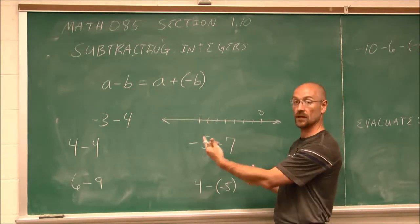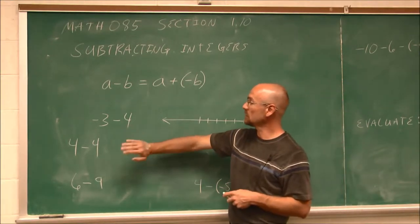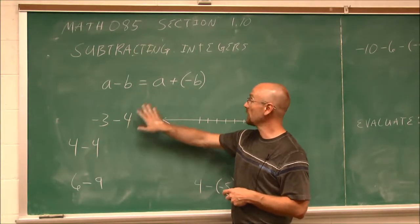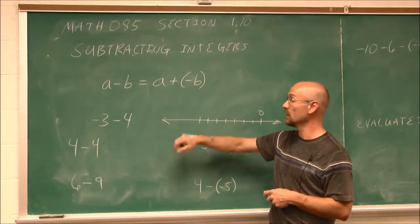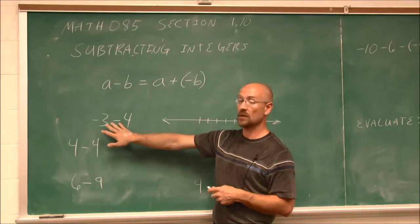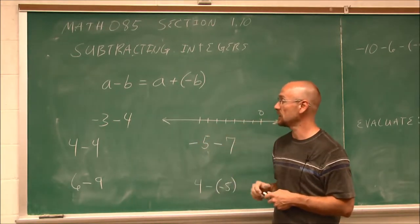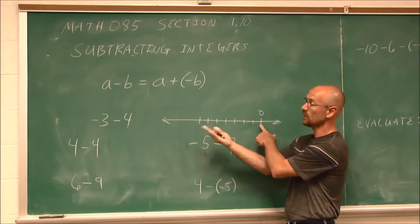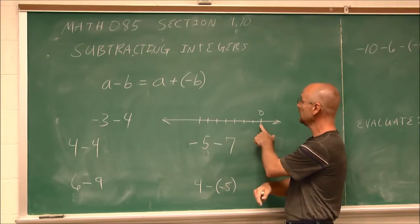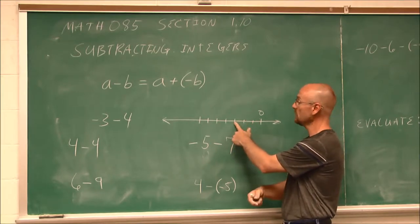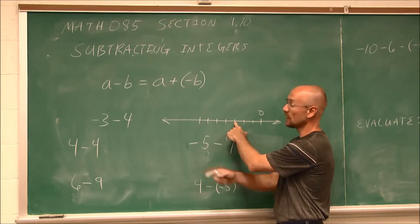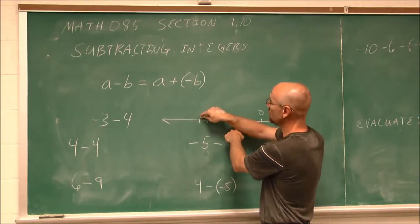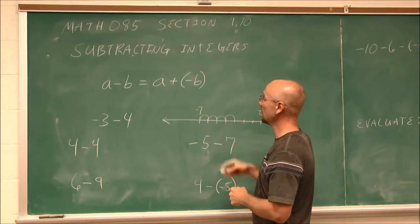Right is positive, left would be negative. So let's look at this: we have negative 3 and we're going to subtract 4. We could think of it as negative 3 plus a negative 4. Same sign — combine, just keep the sign. On a number line, my starting point is negative 3, then I go 4 more to the left. That brings me to negative 7.